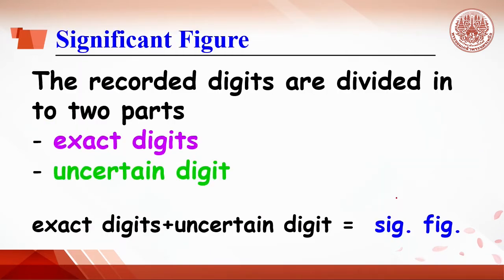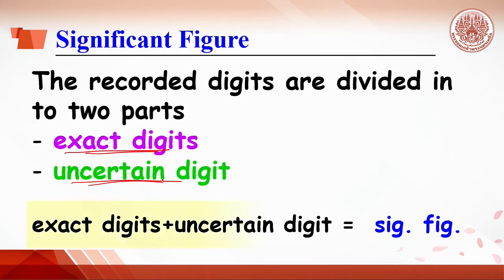The digits recorded can be divided into two parts: exact digits and uncertain digits. Exact digits are obtained from the markings of the measuring device that are read exactly, and there can be many such digits. The uncertain digit is the one last digit estimated from the smallest scale of the measuring device.